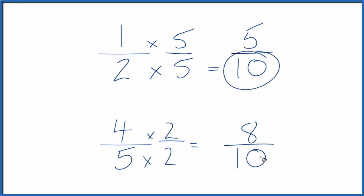Now we have the same denominator. We just compare the numerators. And eight, that's bigger than five. So eight-tenths, that's larger than five-tenths. And four-fifths, that's larger than one-half, since these are equal here.